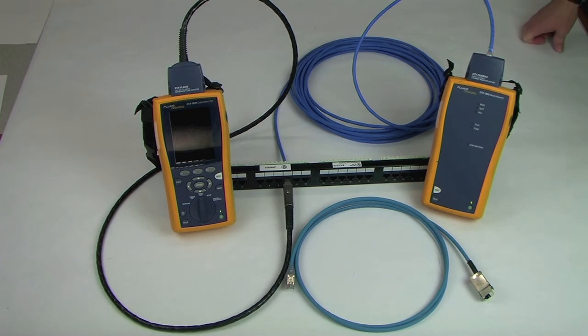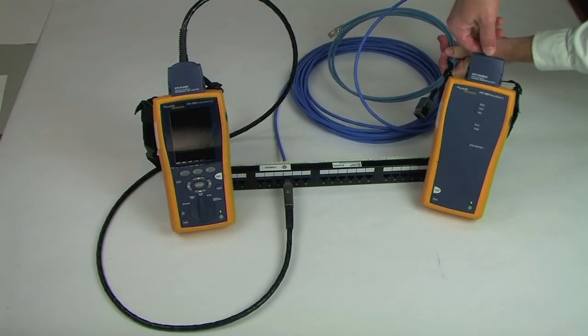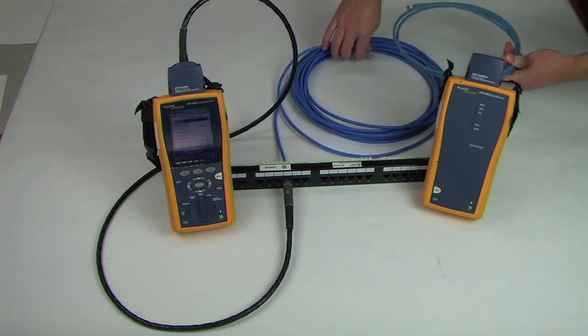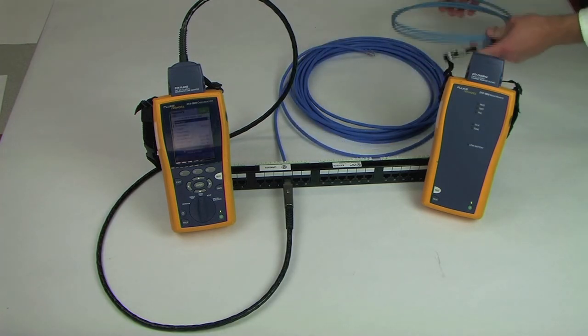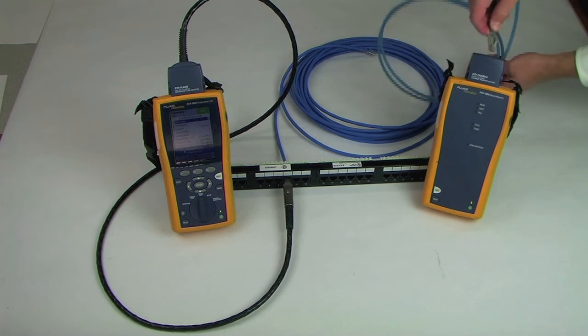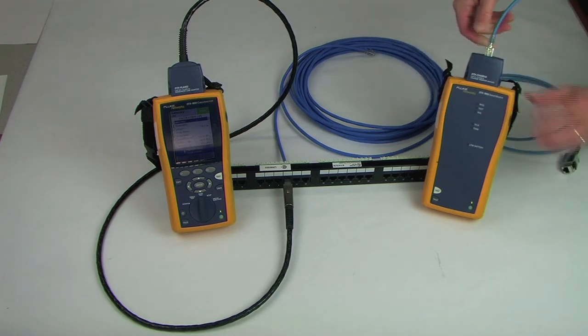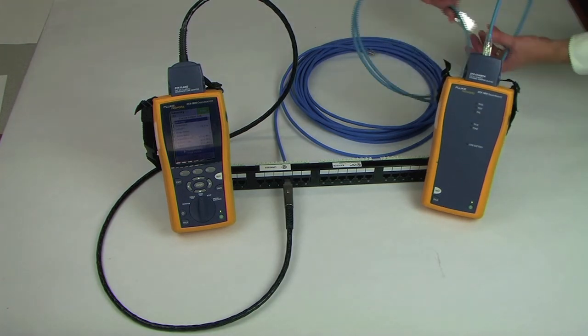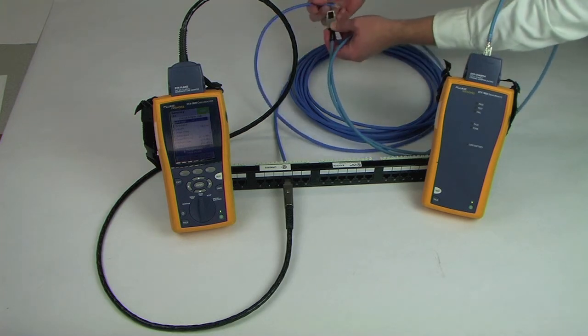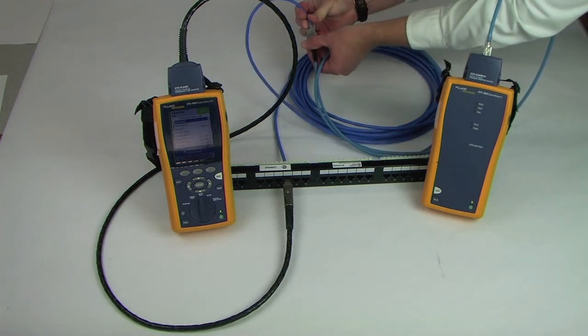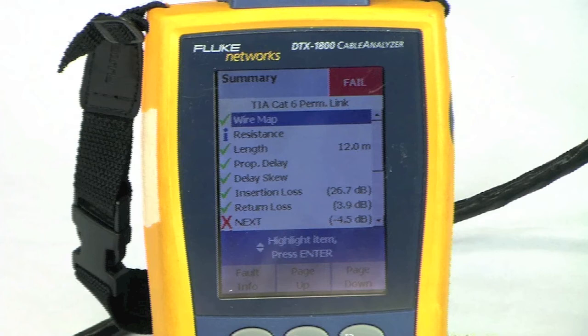The test results were dramatically different between the two configurations due to the field-terminated plug being connected to the OCC field-plug test adapter instead of directly to the channel adapter. The test adapter plug is excluded from the measurement. However, the poorly terminated field plug connected to the test adapter jack is now factored into the performance of the overall link. The results show the significant impact the plug has on the link performance.